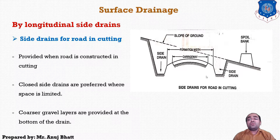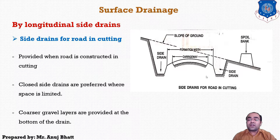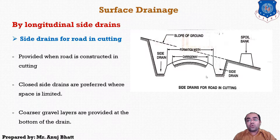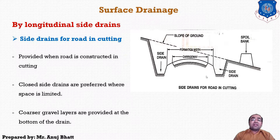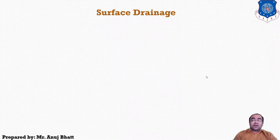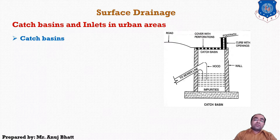Generally, closed drains are preferred in such cases. Covered drains or drainage trenches properly filled with layers of coarse sand and gravel may be used. Coarse gravel layers are provided at the bottom of the drain surface. The next available provision is the catch basin, and you can also provide an inlet in urban areas.